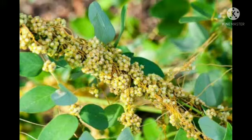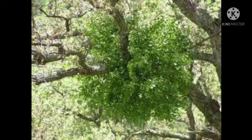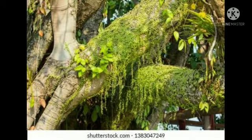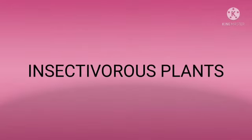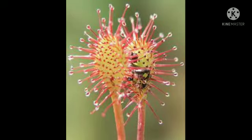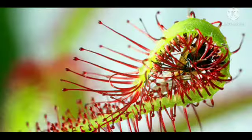Cassytha, Cuscuta, and Loranthus are some kinds of plants which live in or on other plants, thus deriving food and shelter from them. Some plants that do not make food are derived from others.